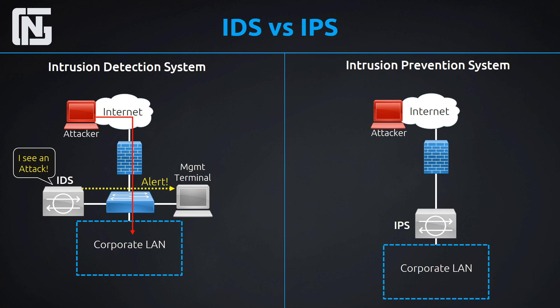There are many different ways intrusion detection systems function to detect intruders. One interesting thing they do is run through a network normalization process, where they learn what the normal functions of the network look like, and when they see a difference, they send an alert. They can also detect things like trojans and different types of malware. Their signatures always need to be updated on these IDS and IPS devices.